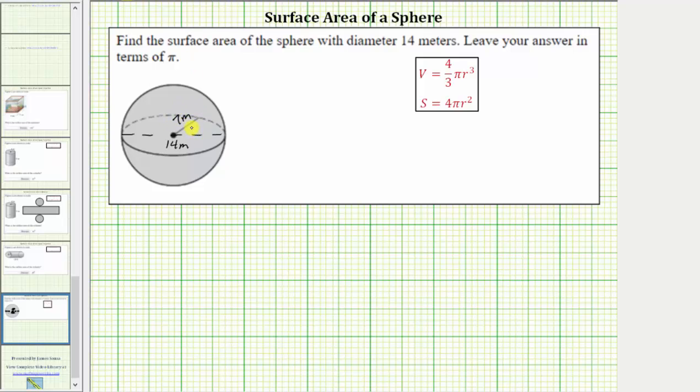So for the formula, we have r equals seven meters, which means the surface area of the sphere is equal to four times pi times r squared, which is the square of seven meters.